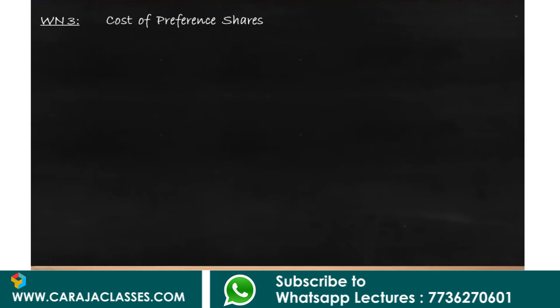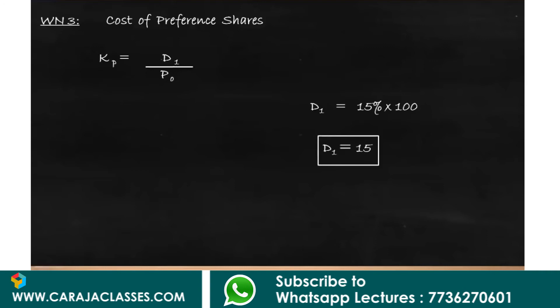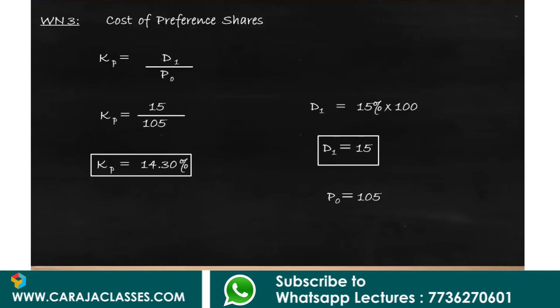Next, cost of preference shares. Since there is no information about redemption, cost of preference shares is simply dividend divided by market value. The dividend D1 is face value 100 into 15 percent, which is 15. P0 is 105. So cost of preference shares is 15 divided by 105, which is 14.3 percent.